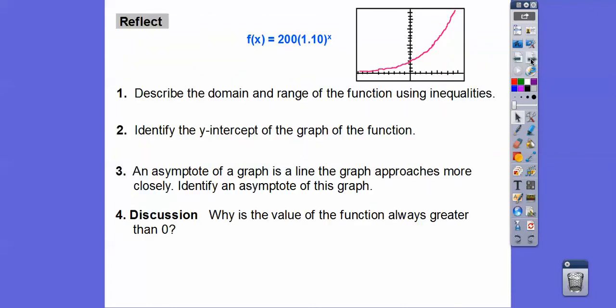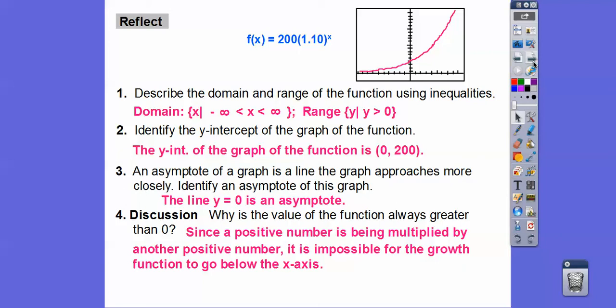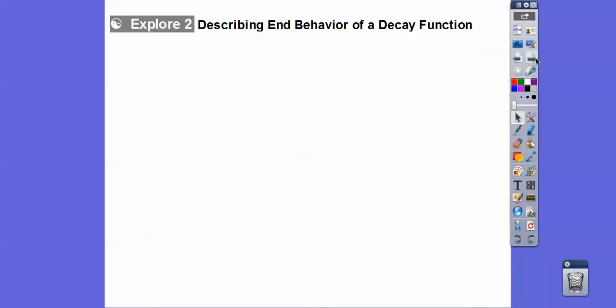So describe the domain of the function. So your domain is how far does it go to the left and how far does it go to the right? It goes forever. So you can say all real numbers and your range is, it goes up forever, but it doesn't get down to zero. So it's just greater than zero. Identify the Y-intercept. So the Y-intercept is where X equals zero right there. So when X equals zero, we get 200 right there because you get 200 times anything. So the zero is one. So 200 times one. So the Y-intercept of the graph is at zero comma 200. And an asymptote, you guys, an asymptote is this line right here. It's a line that the graph increasingly gets close to, but will never touch. So the line Y equals zero is our asymptote right here.